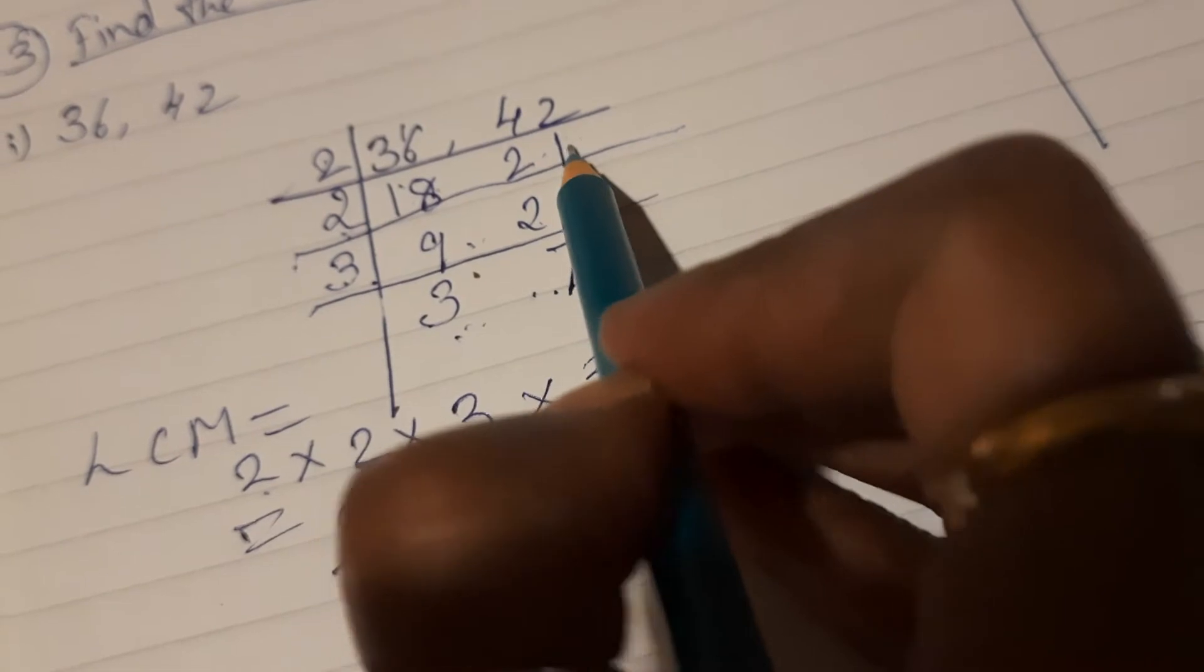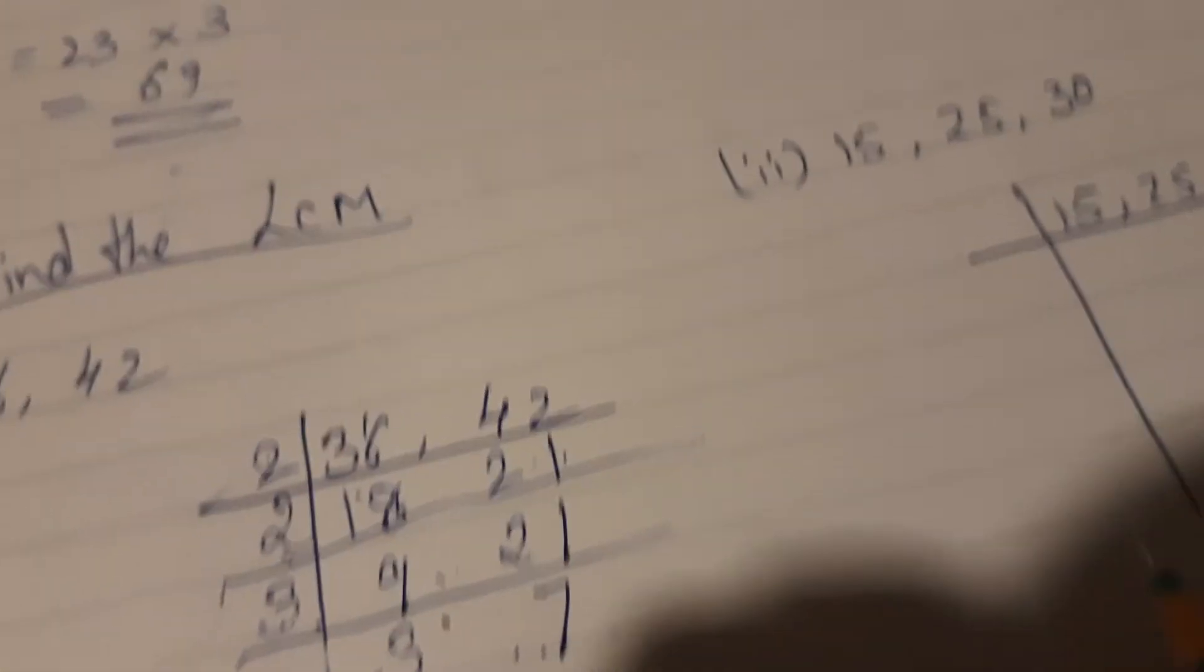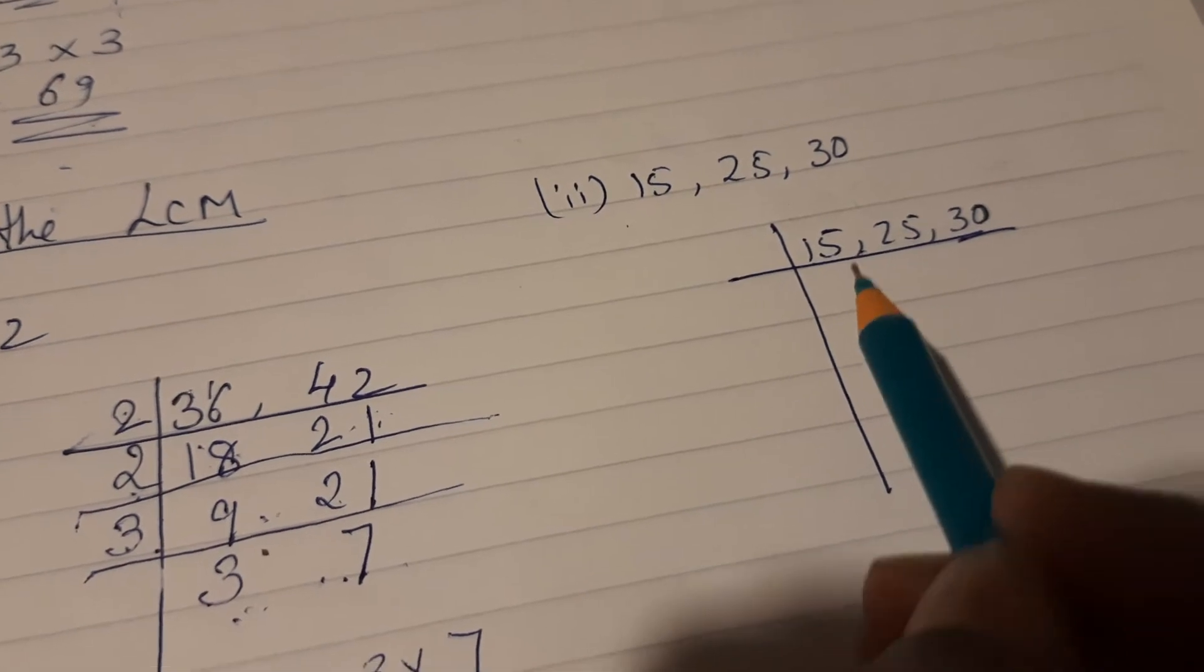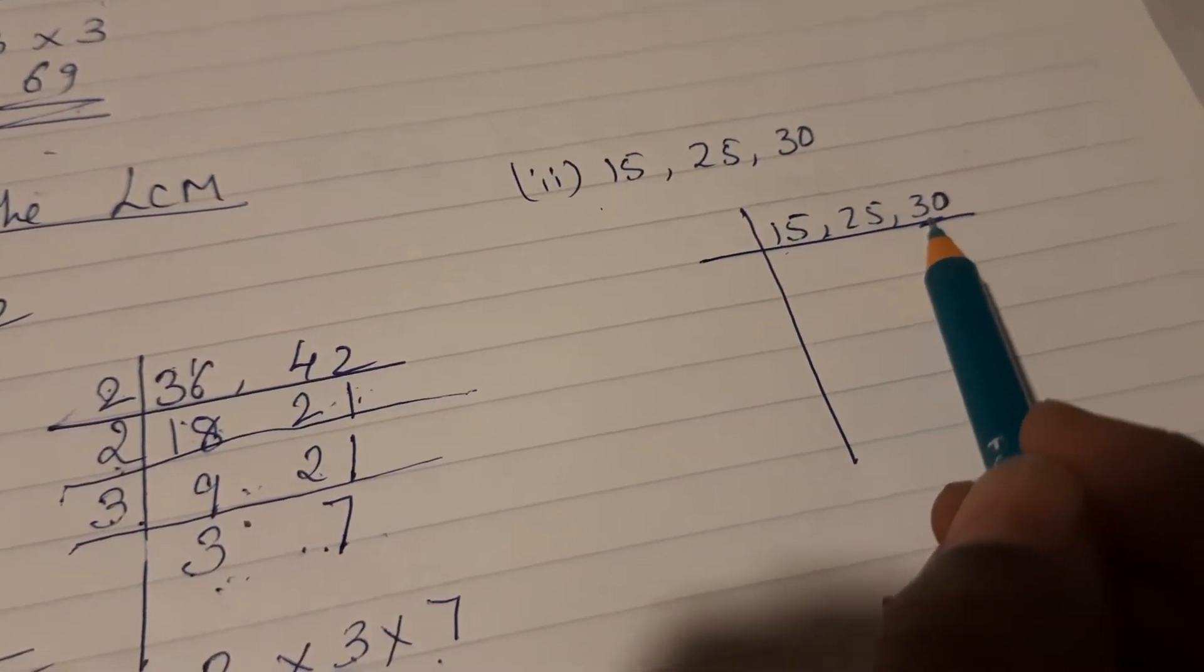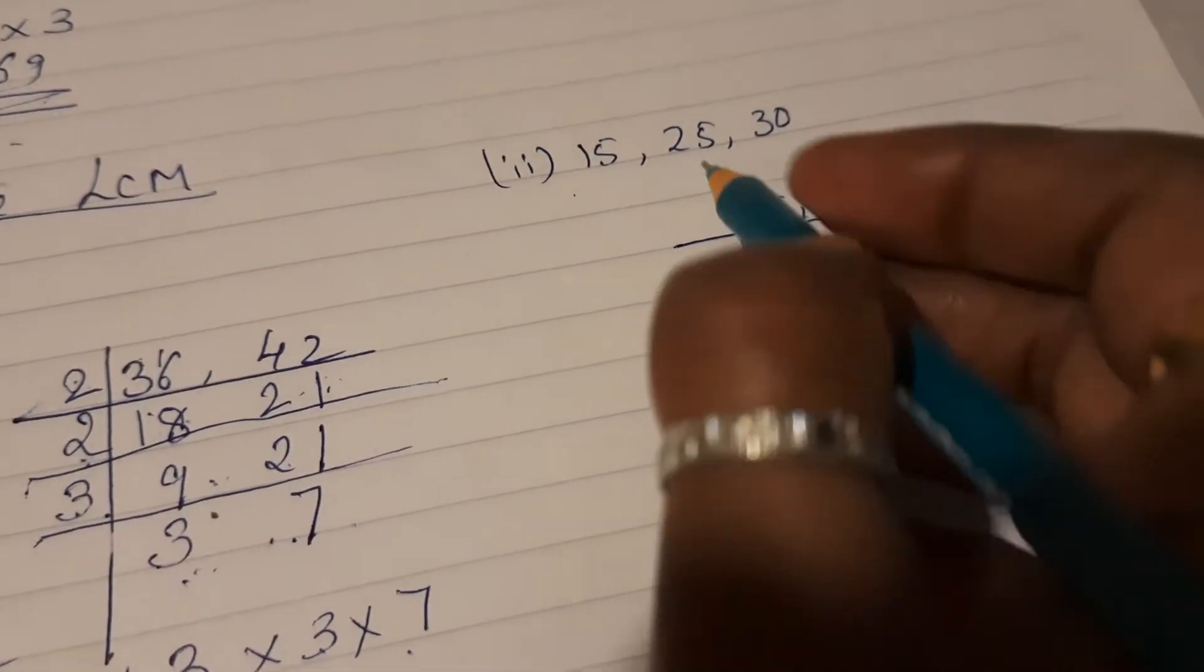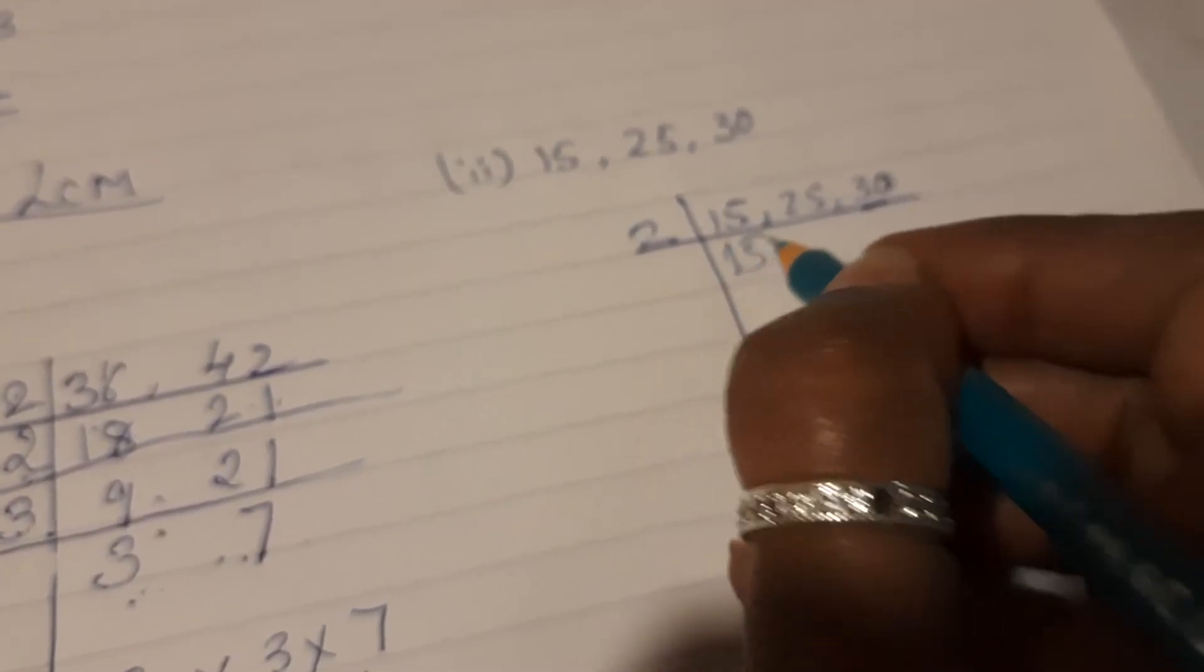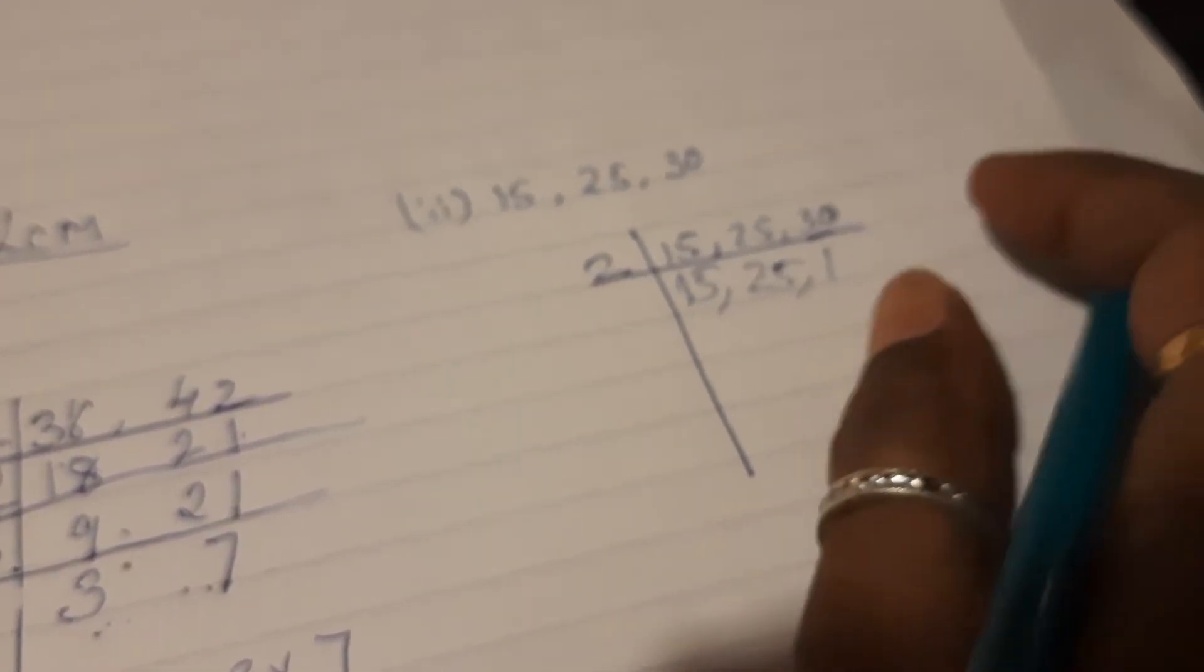Now we will solve three numbers: 15, 25, and 30. Small numbers, prime factors means first small number. All will go by 5's table, but we can't use 5 because 30 is divisible by 2, so first we'll use 2. 2 fifteens, leave it as it is down, bring down 25 as it is, and here 2 ones are 2.